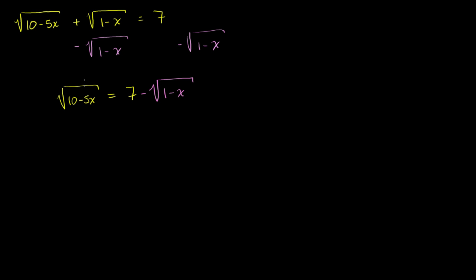We've isolated one of the radicals. Let's square both sides of this equation. The square root of 10 minus 5x, squared, is just going to be 10 minus 5x. And that is going to be equal to the right-hand side expression squared: 7 minus the square root of 1 minus x, all squared.